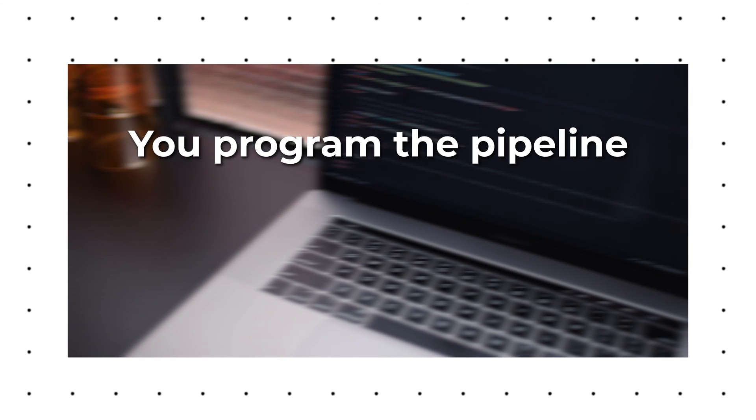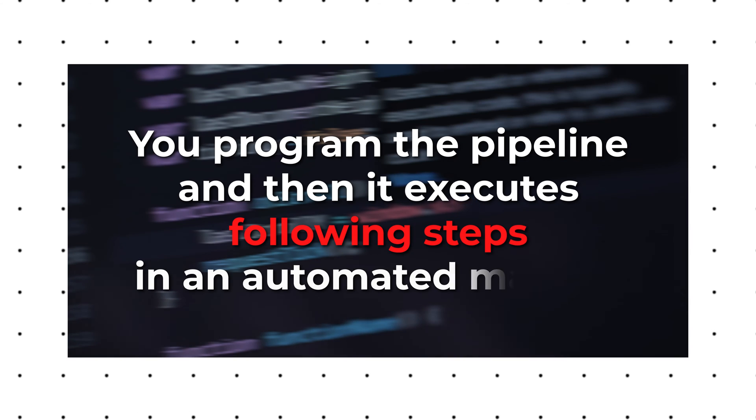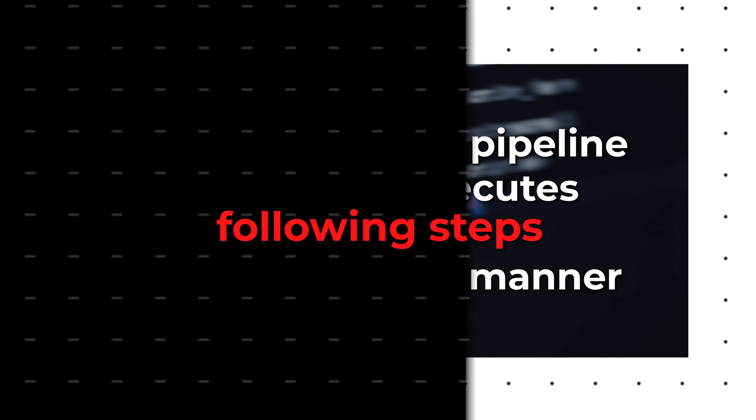So how does a machine learning pipeline work? A pipeline is meant to run multiple times in an automated manner. You program it and then it executes the following steps automatically.